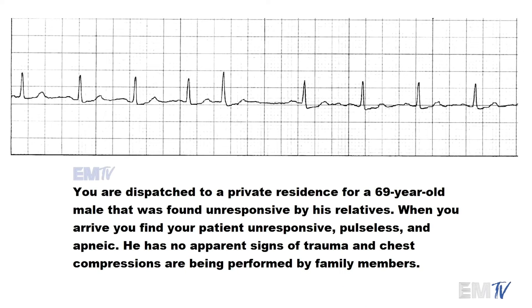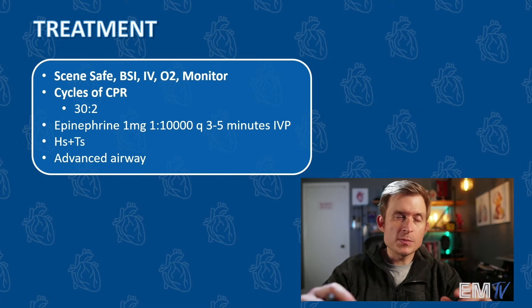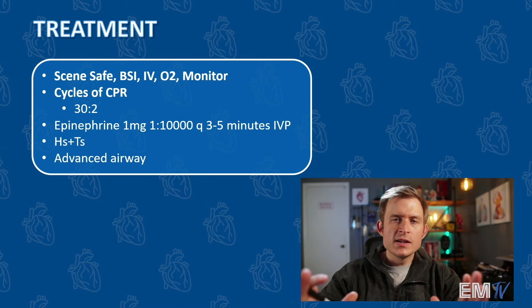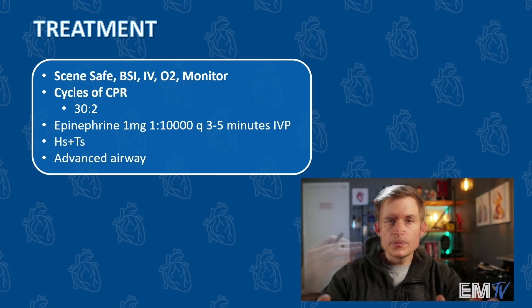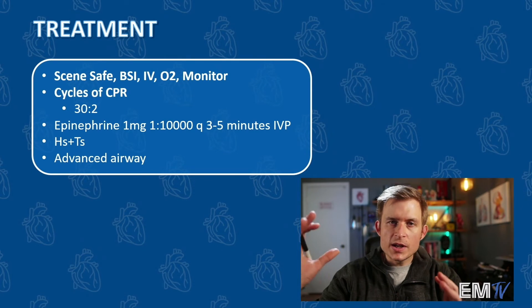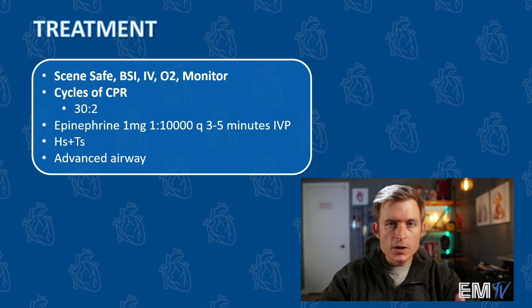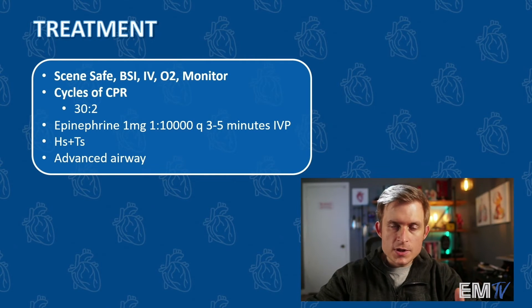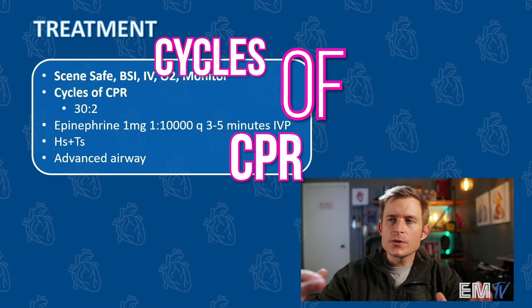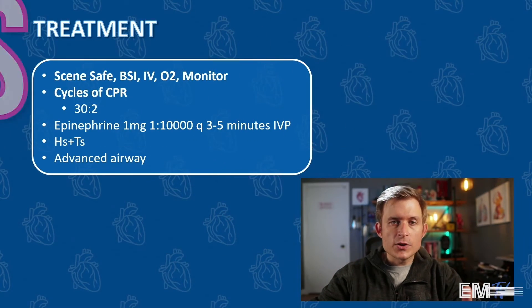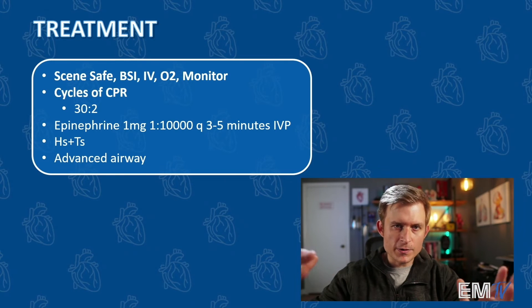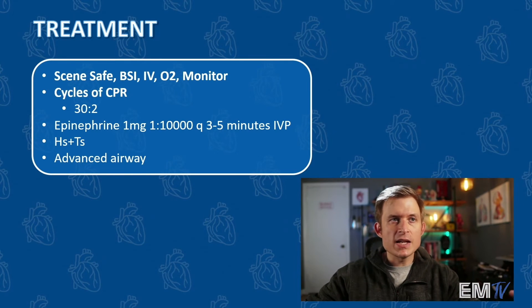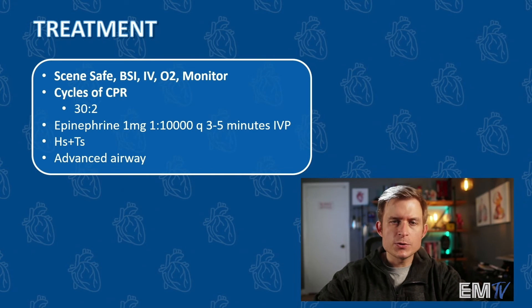Let's go ahead and move on now to the treatment. As always, we'll begin with the mantra: scene safe, BSI, IV O2 monitor. Because this is a CPR event, we'll go ahead and relieve the family and begin doing cycles of CPR. This is a static cardiology card, so you don't need to list everything in a sequential format — you can list treatment in chunks. I'm doing cycles of CPR, 30 to 2, switching out a provider every 2 minutes or every 5 cycles, making sure we have capnography on and getting a waveform reading of 10 millimeters of mercury to assure good compressions.